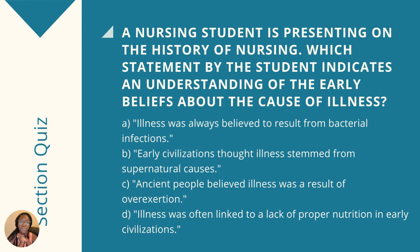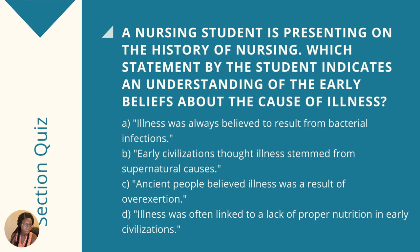Now for the quiz. A nursing student is presenting on the history of nursing. Which statement by the student indicates an understanding of the early beliefs about the causes of illness? Please pause the video and answer. The answer is B: early civilizations thought illnesses stemmed from supernatural causes. Most early civilizations believed that illnesses had supernatural causes.